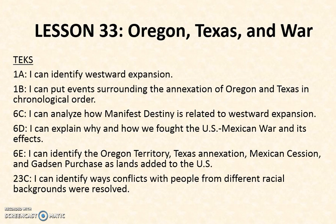Our TEKs: we can identify westward expansion and put events into chronological order. We can explain how Manifest Destiny is related to westward expansion. An important one, 6D, is that we can explain how and why we fought the U.S.-Mexican War and what its effects were. We can identify the Oregon Territory, Texas Annexation, Mexican Cession, and Gadsden Purchase as lands added to the U.S., and identify ways in which conflicts with people of different racial backgrounds were resolved.